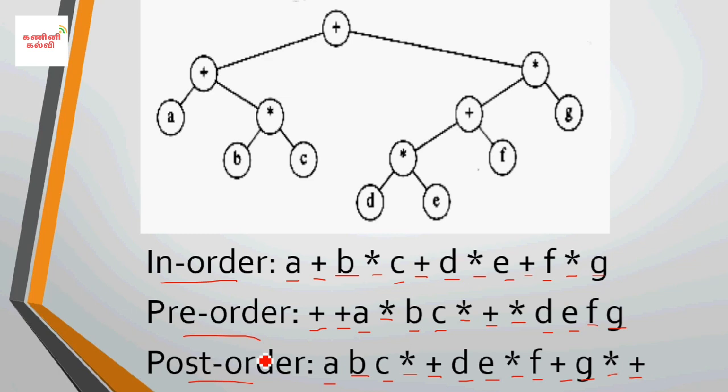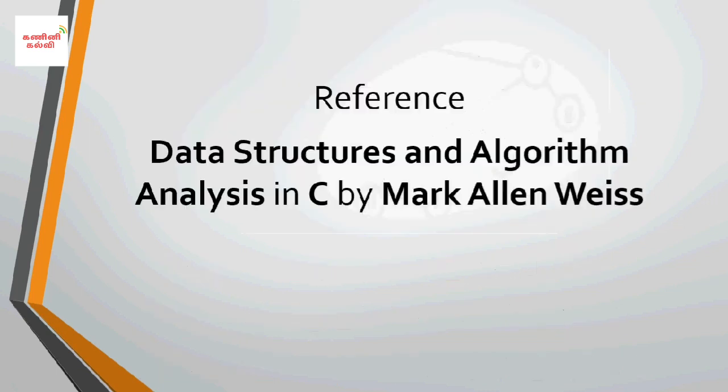So these are the three types of tree traversal: in-order, pre-order, and post-order. That's all about binary search tree and tree traversal. In the next video, we will discuss the topic of AVL trees. Thank you, thanks for watching this video.